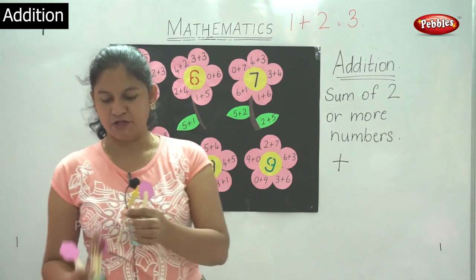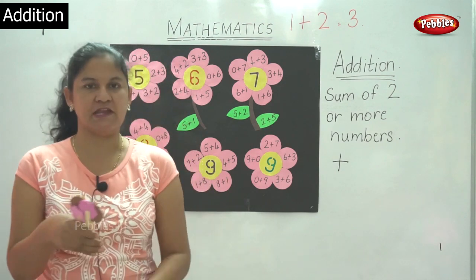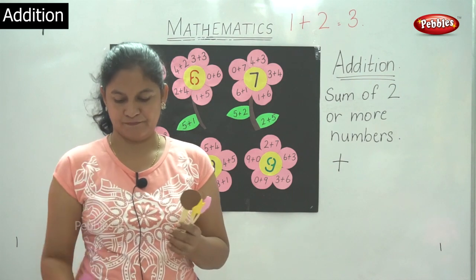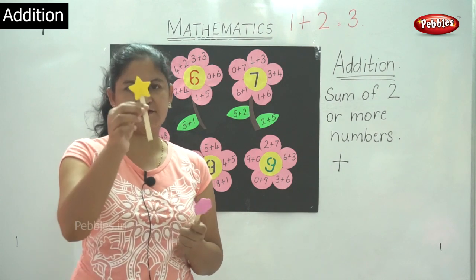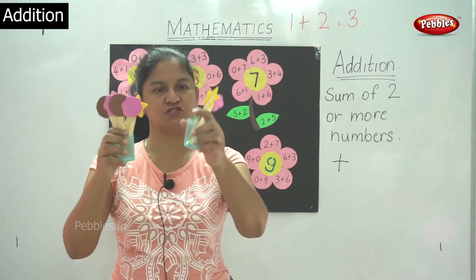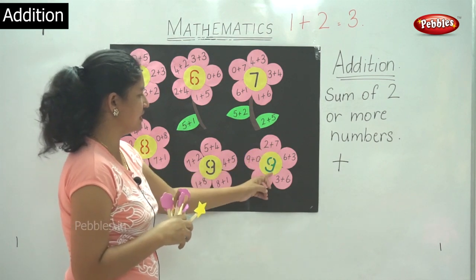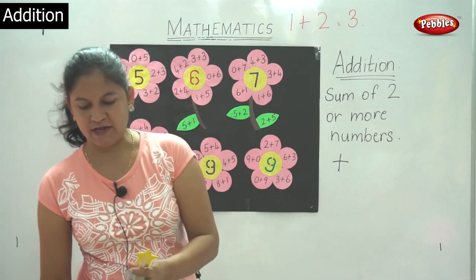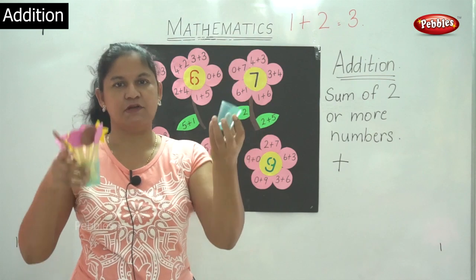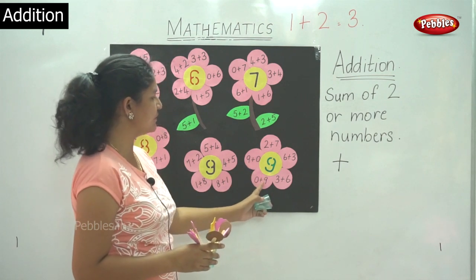Next I am placing 2 ice creams in this cup and 1, 2, 3, 4, 5, 6, 7 ice creams in the other cup. So 7 plus 2 gives me 9 or 2 plus 7 gives me 9. Now I am having 9 ice creams in this cup and nothing in the other cup, so 9 plus 0 will give me 9 or 0 plus 9 is 9.